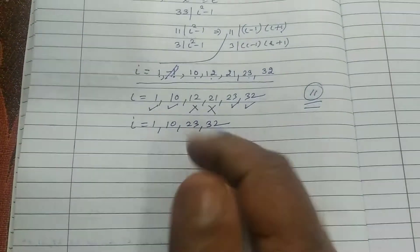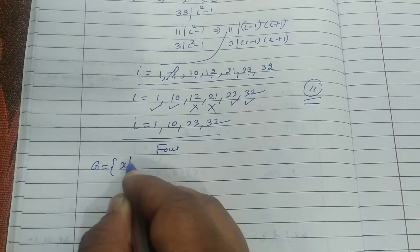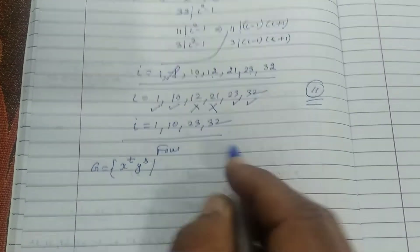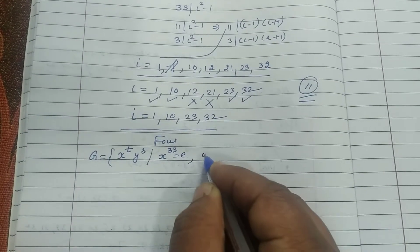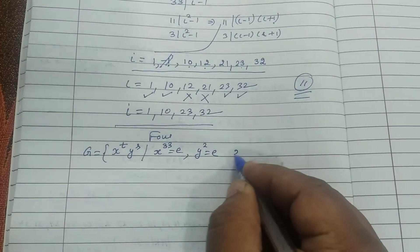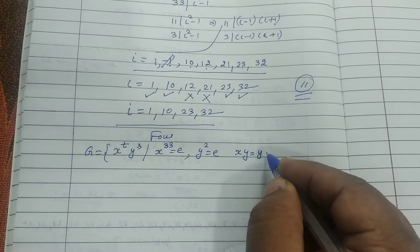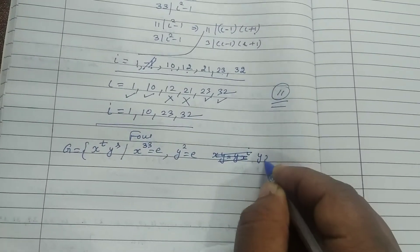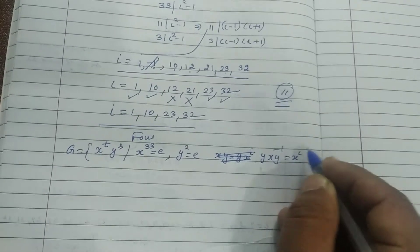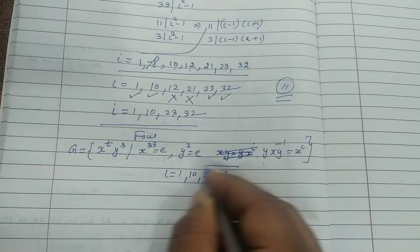We get 4 values. Only 4. So total i value is 1, 10, 12, 21, 23, 32. Finally i value is correct. This value of i is 1, 10, 23, 32.